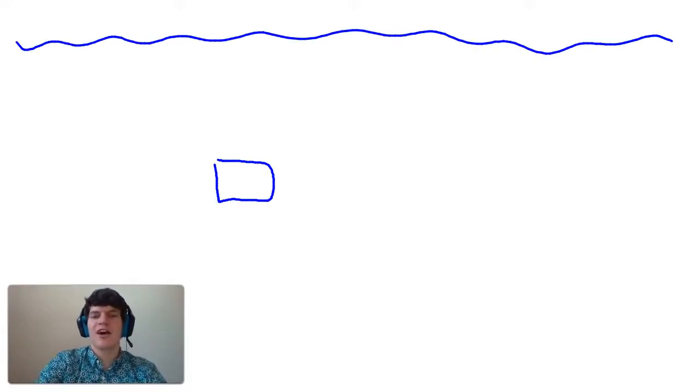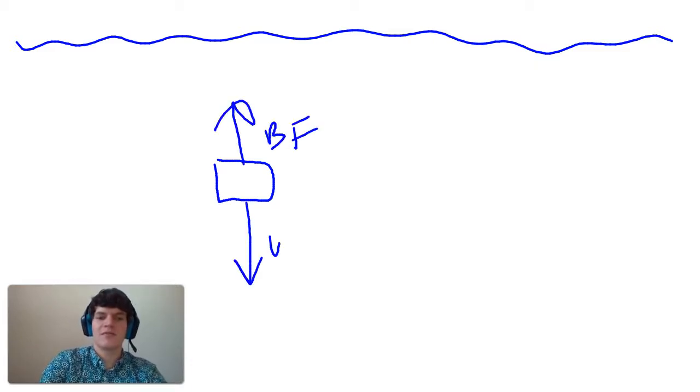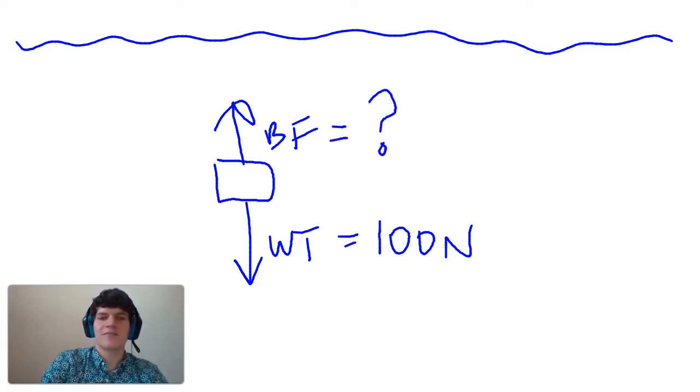In this practice problem, we're told that there's an object submerged underwater. Objects that are submerged underwater have a buoyancy force and they also have a weight. We are told that the weight is equal to 97.89 N, which rounds to approximately 100 N. We aren't told the buoyancy force, we're going to need to calculate for that. We're told that the net force is 50 N.